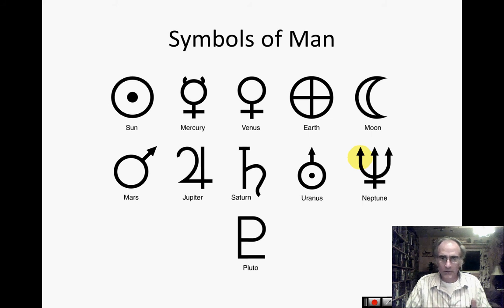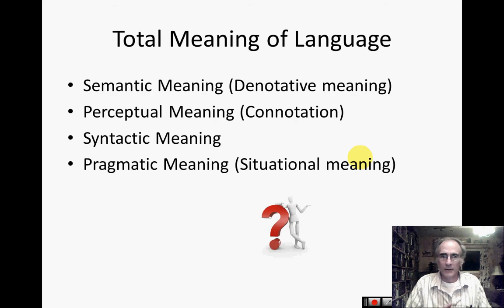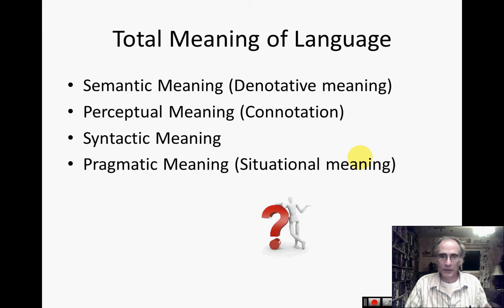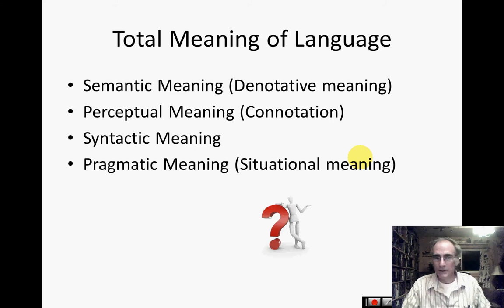When we look at the total meaning of language, we need to look at the semantic meaning — also called the denotative meaning — which is the dictionary definition. The perceptual meaning, or connotation, is the emotional impact that words actually have. The syntactic meaning is not what the word means but how the word is used within a sentence. And the pragmatic meaning, or situational meaning — some sentences quite literally don't make sense unless you were there. So let's look at these one at a time.